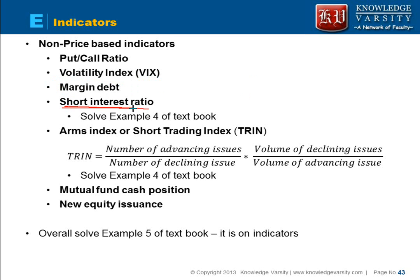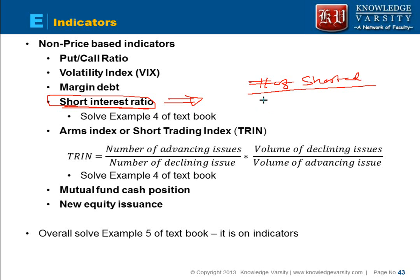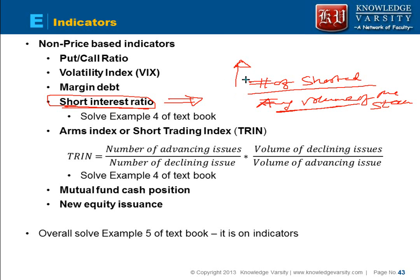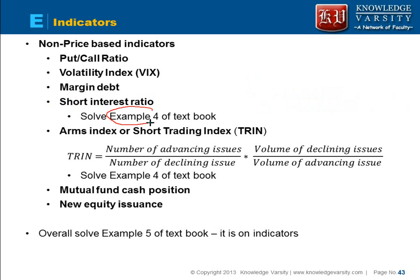The next indicator is the short interest ratio. The short interest ratio is computed as the number of shares shorted divided by the average volume of the stock. This tells you what percentage of short positions exists relative to average volume. If this ratio is very high, it means people are expecting the market to decrease and are shorting the stock. Note that you should solve Example 4 of the CFA book, as this type of question can appear in the exam and requires knowing the formula.